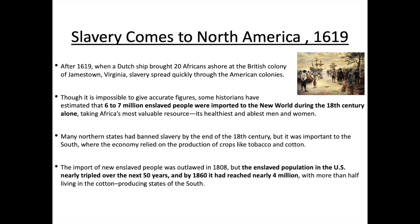After 1619, when a Dutch ship brought 20 Africans ashore at the British colony of Jamestown in Virginia, slavery spread quickly through the American colonies. This links back to the transatlantic slave trade we looked at in Year 8. Though it is impossible to give accurate figures, some historians have estimated that six to seven million enslaved people were imported to the new world during the 18th century alone, taking Africa's most valuable resource — its healthy men and women. So remember, this is only in the 1700s: six to seven million enslaved people just in that century.